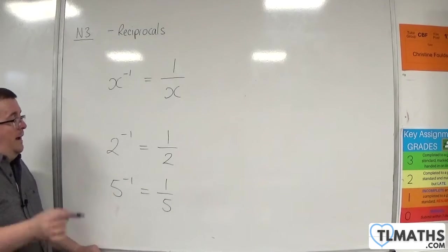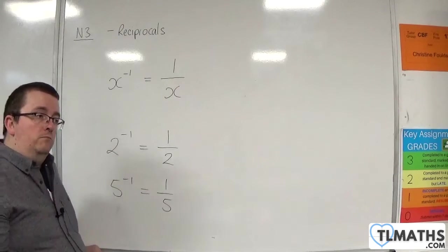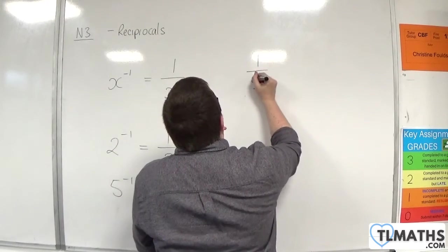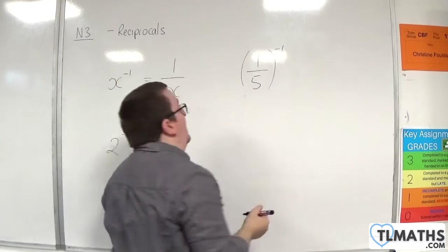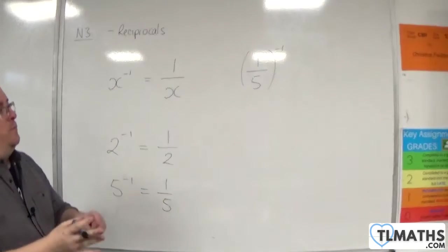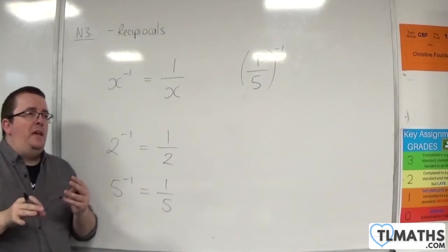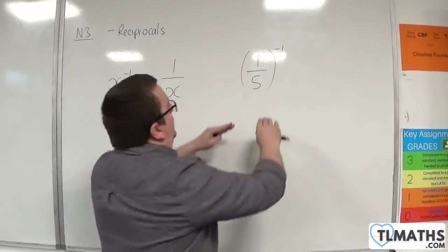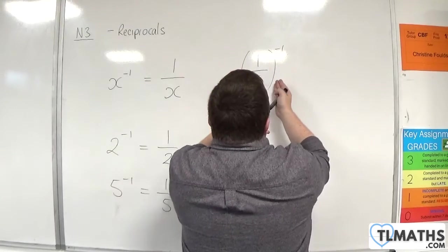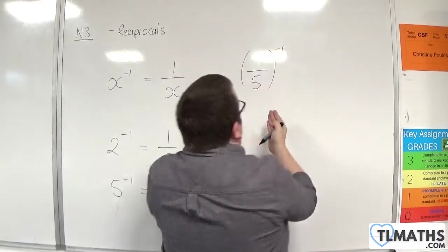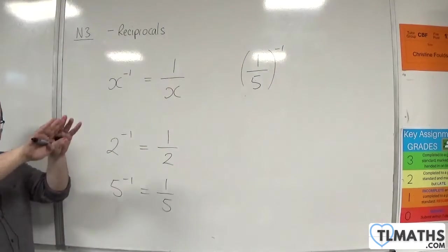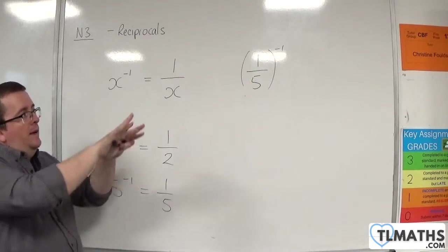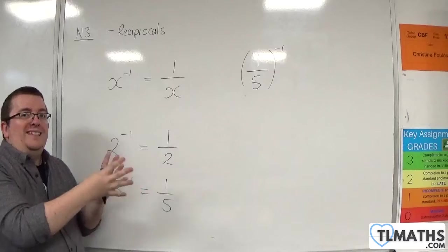You can also have the reciprocal of a fraction. So you could have 1 fifth to the minus 1 like that, and I would really need to put it in a bracket. The bracket here isn't being used for order of operations reasons. It's really to say I want to make sure that I'm putting all of that to the minus 1, just making sure it's clear that that minus 1 exponent is affecting the whole thing that's inside the bracket.